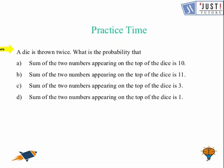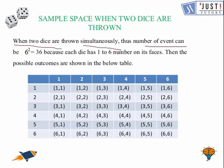Now it's practice time for you. So let us try this part here. Once again a die is thrown twice. We need to find the probability when the sum of two numbers appearing on the top of the dice is 10. So here let us find 10.